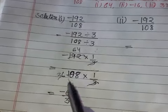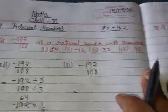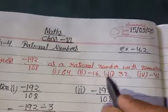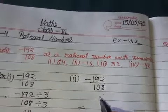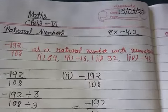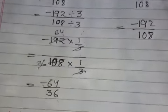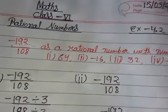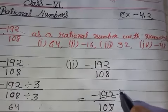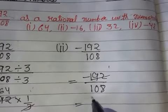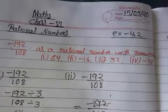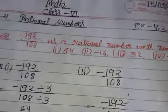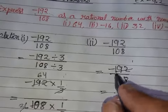The result after dividing by 3 is -64/36. For the second part, we need to change it to have numerator 16. So we divide by 4: 4 times 4 is 16, and 4 times 4 is also 16. When divided by 3 it gives 64, so we divide by 4.